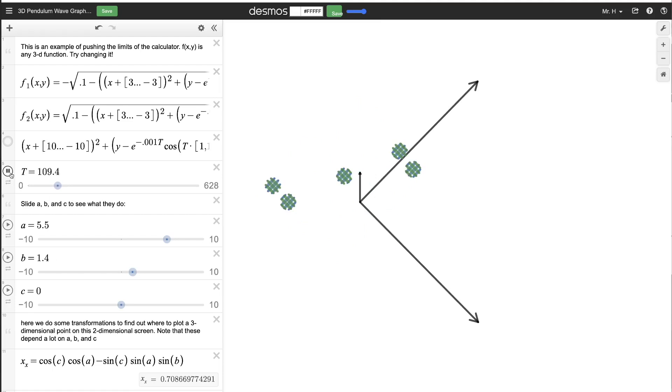Now a pendulum wave is an interesting phenomenon that happens when you have pendulums that are multiple different heights all started at the same time. You end up with these emerging patterns that show up in the oscillations as they're going back and forth.